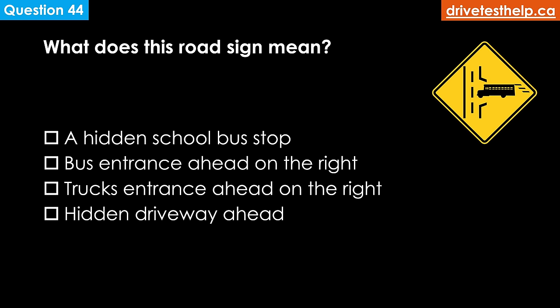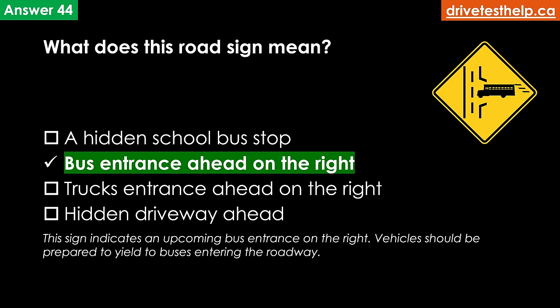What does this road sign mean? Options: a hidden school bus stop; bus entrance ahead on the right; truck entrance ahead on the right; hidden driveway ahead. The correct answer is bus entrance ahead on the right. This sign indicates an upcoming bus entrance on the right — vehicles should be prepared to yield to buses entering the roadway.